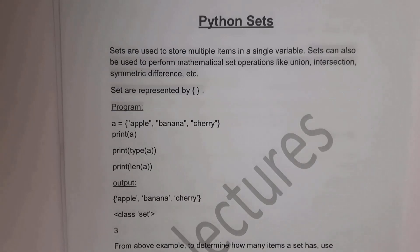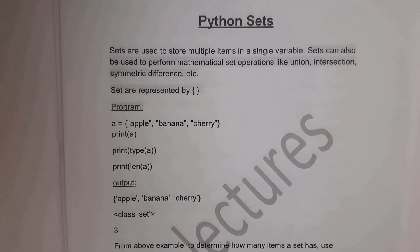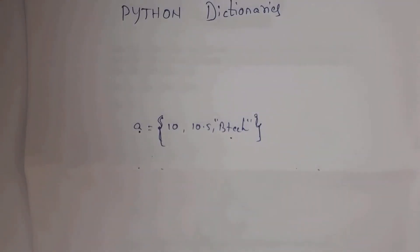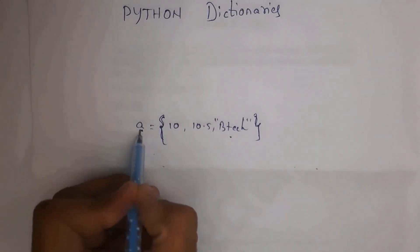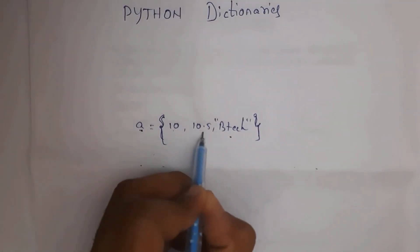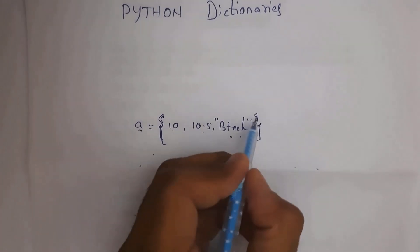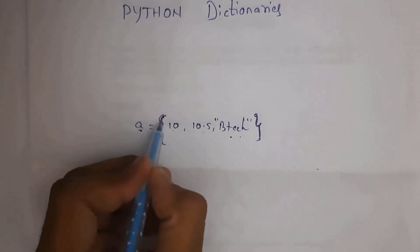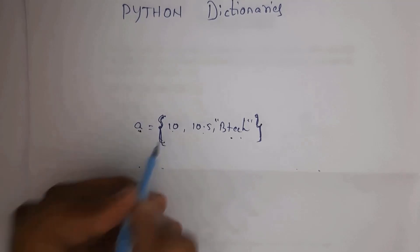If you want to store multiple values in a single variable, then you can use Python sets. We represent a Python set by using curly braces. For example, in single variable a, I am storing multiple values: 10, 10.5, and 'btec', where btec is a string so it is represented in double quotations. Inside curly braces I written 10, 10.5, btec.